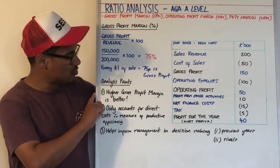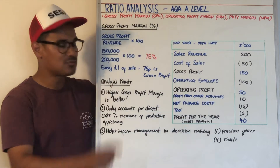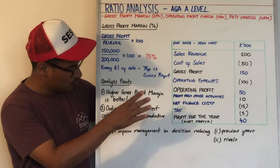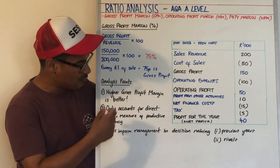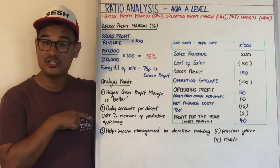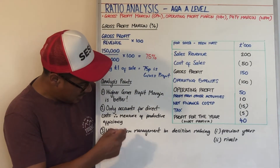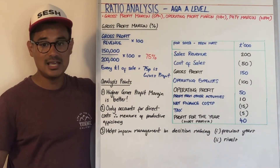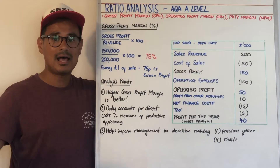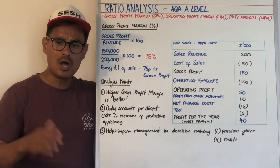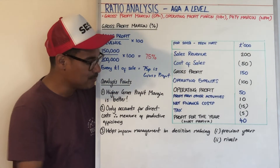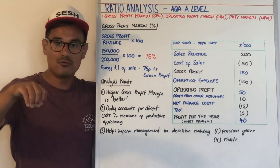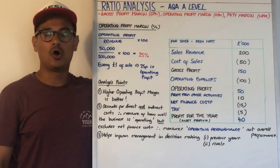Analysis points to consider with gross profit margin: the higher the gross profit margin, the better — you want it as high as possible. It only accounts for direct costs, and therefore it's a measure of productive efficiency. It helps inform management decision making when comparing to previous years to see if it's worsening or improving, and also against rivals within your industry.